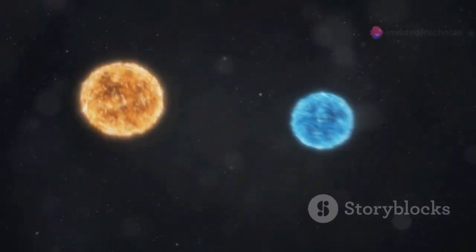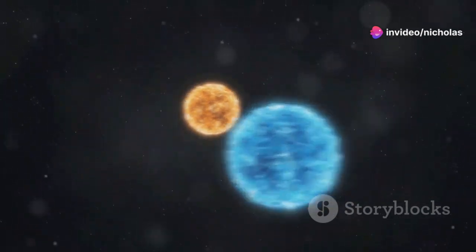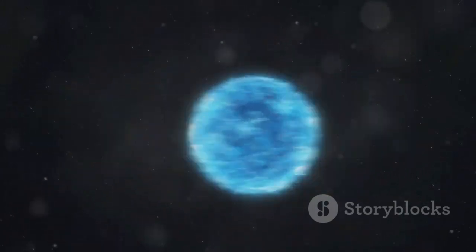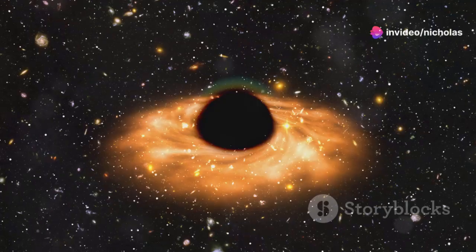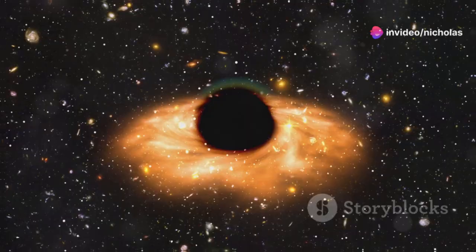V-616 Monocerotis is a binary system with a black hole about 10 times the mass of our Sun, locked in a gravitational dance with a companion star. As the black hole pulls in material from its companion, it heats up, emitting X-rays that we can detect here on Earth. It's a cosmic ballet, a delicate interplay between gravity, matter, and energy.